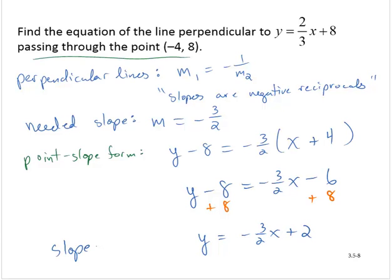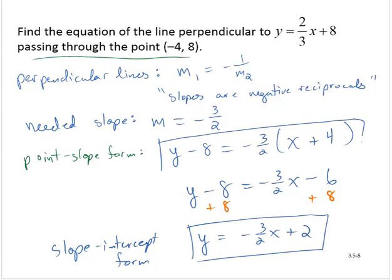And so that's the slope-intercept form. All right, so we have the point-slope form and the slope-intercept form, whichever we want.